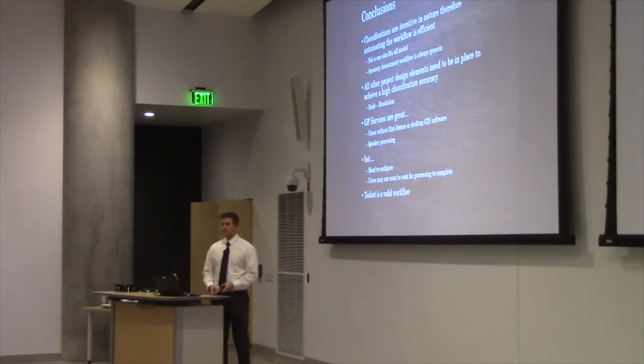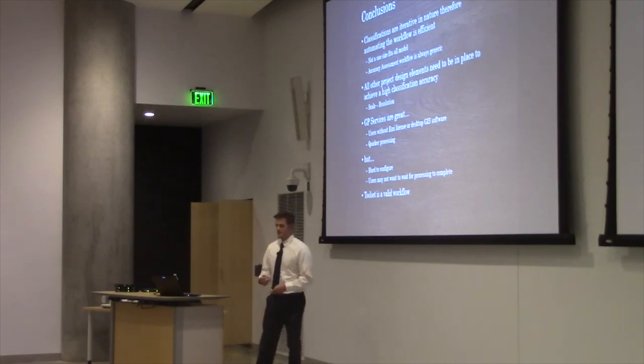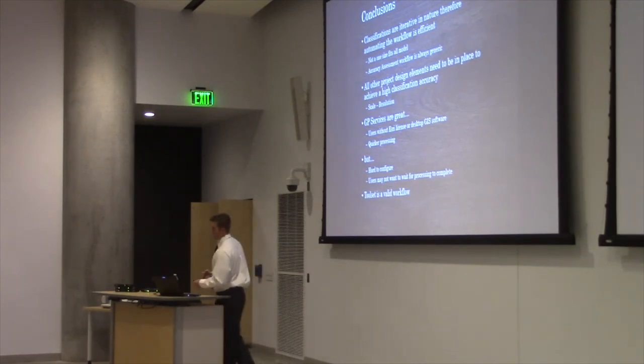All other project elements need to be in place to achieve a high classification accuracy. That's kind of what we saw with the Saguaro National Park West classification, where we had a really high-resolution classification. The vegetation classes were very small differences. The spectral signatures being emitted were minute changes upon one another. We need a high-resolution sensor to be able to match that.